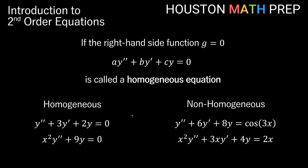You can see a difference between homogeneous and non-homogeneous second order equations here. On one side we have the right side equal to 0, so those are homogeneous equations. On the other side we have cosine 3x and 2x — functions of x on the right-hand side — so those are non-homogeneous equations.